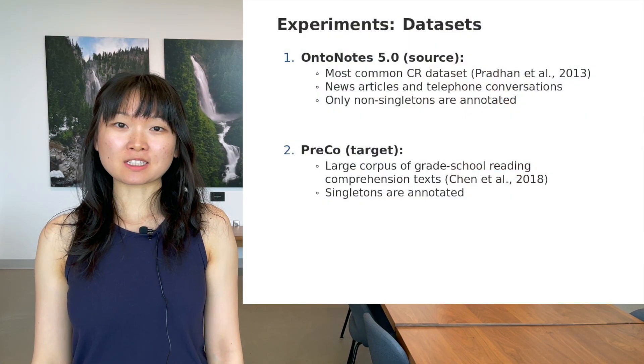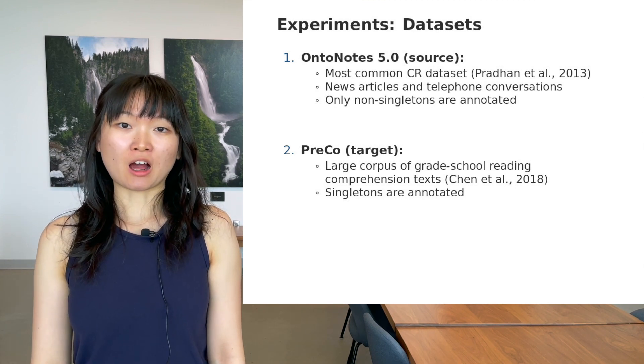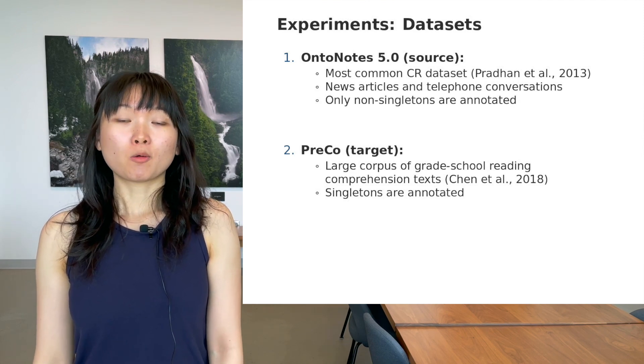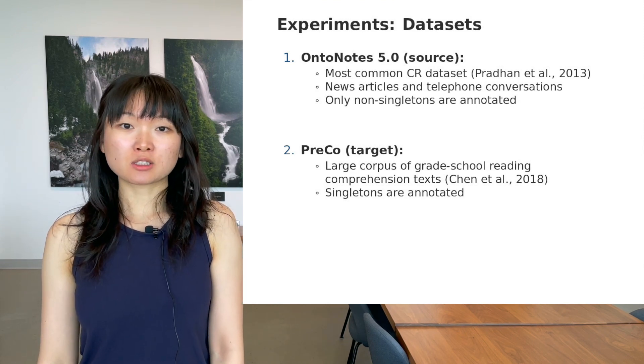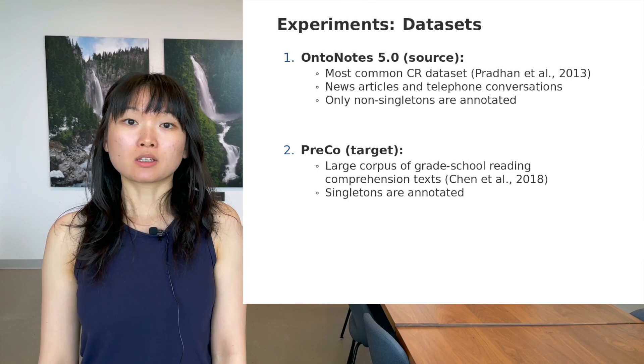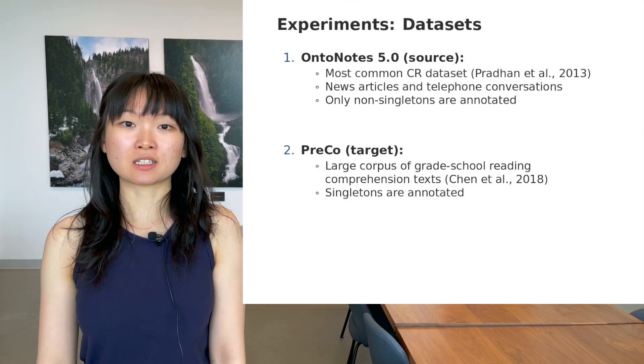For this video, we focus on transferring the model from a source domain, OntoNotes, to a target domain, Preco, which is a large corpus of grade school text. One main difference is that OntoNotes does not annotate singletons, which are clusters with only one entity mention. So, the OntoNotes model may not be able to detect the singletons in Preco. We evaluate the models based on average F1 score on Preco. On each cycle, we sample 50 spans from a document of the Preco training dataset, use gold annotations to label them, and then train the OntoNotes model on these newly labeled spans.